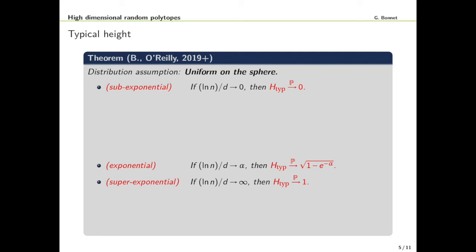But with Eliza O'Reilly we did not give up and we worked hard and obtained asymptotic results. Here it is quite important to remember that we need to specify in which regime we are, how fast grows n compared to d. There are three big families of regimes: sub-exponential, exponential and superexponential. For sub-exponential, when the ratio ln(n) divided by d goes to 0, we show that the typical height converges in probability to 0. In the exponential regime, the typical height will converge to a constant strictly between 0 and 1, depending on your exponential rate. In the superexponential regime the height goes to 1.